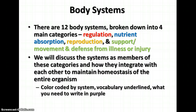We have 12 body systems broken down into four categories: regulation, nutrient absorption, reproduction, and support and movement and defense from illness or injury. We've already discussed the immune system extensively in its own unit. We'll also talk about how skin protects from illness and injury, as well as support and movement. The vocabulary will be underlined, and we'll begin with the systems of regulation, color-coded in red.